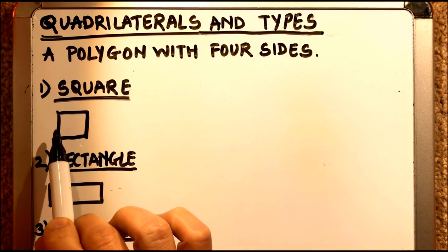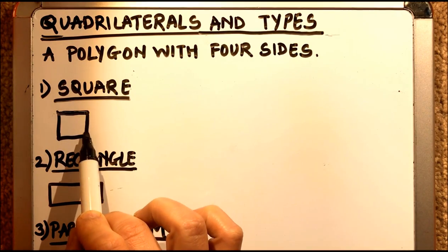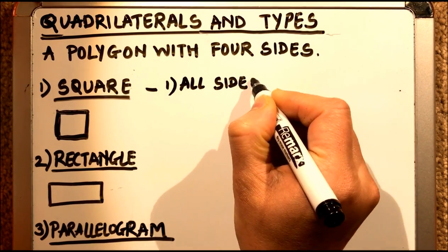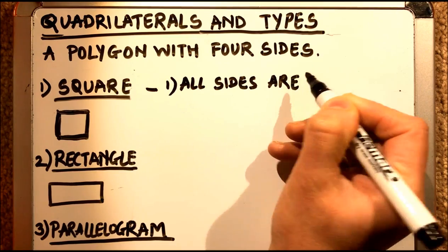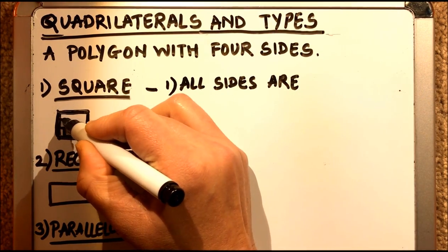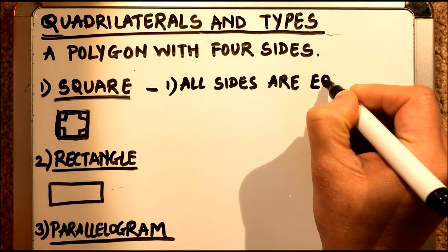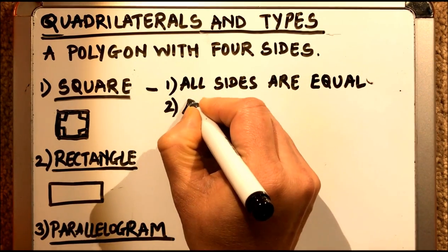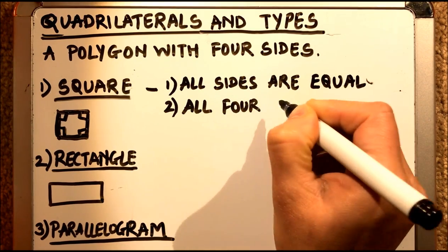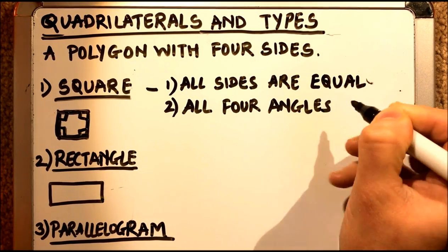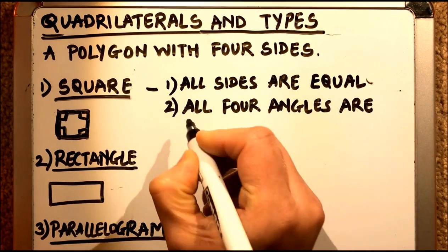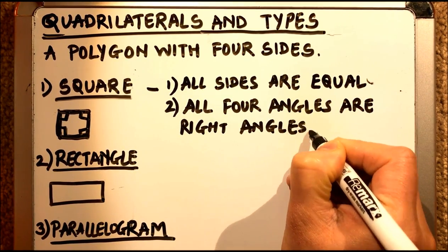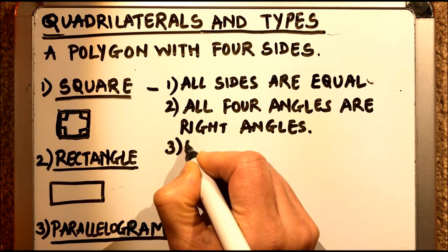First of all we have a square. A square is a quadrilateral in which all sides are equal. The first property of a square is all sides are equal. The second property is all four angles are right angles. The third property is that opposite sides are parallel.